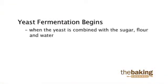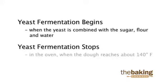Fermentation is basically the yeast consuming sugars and producing CO2 to leaven the product, and acids and alcohols that give flavor to the final bread product. Yeast fermentation begins when the yeast is combined with the sugar, flour, and water and begins consuming the sugars. Yeast fermentation stops in the oven when the dough reaches about 140 degrees Fahrenheit.